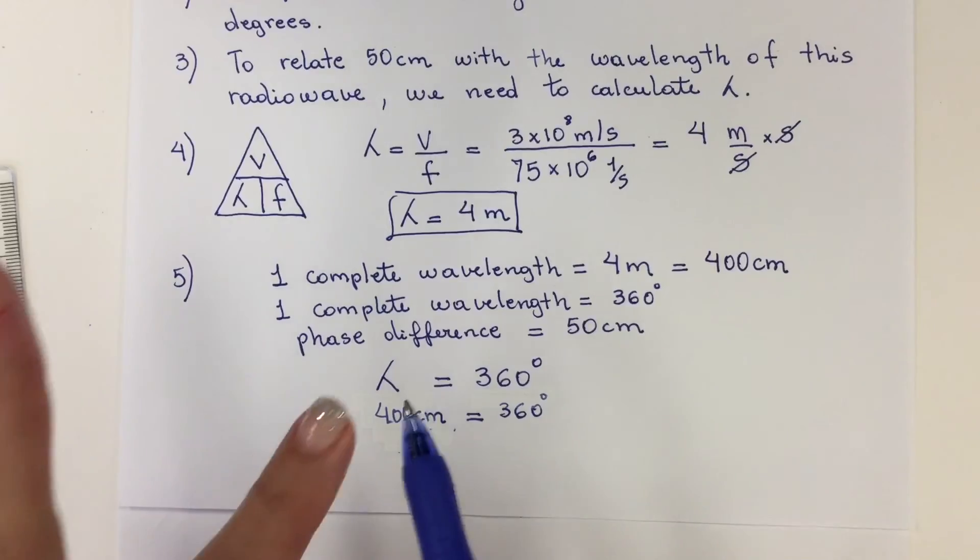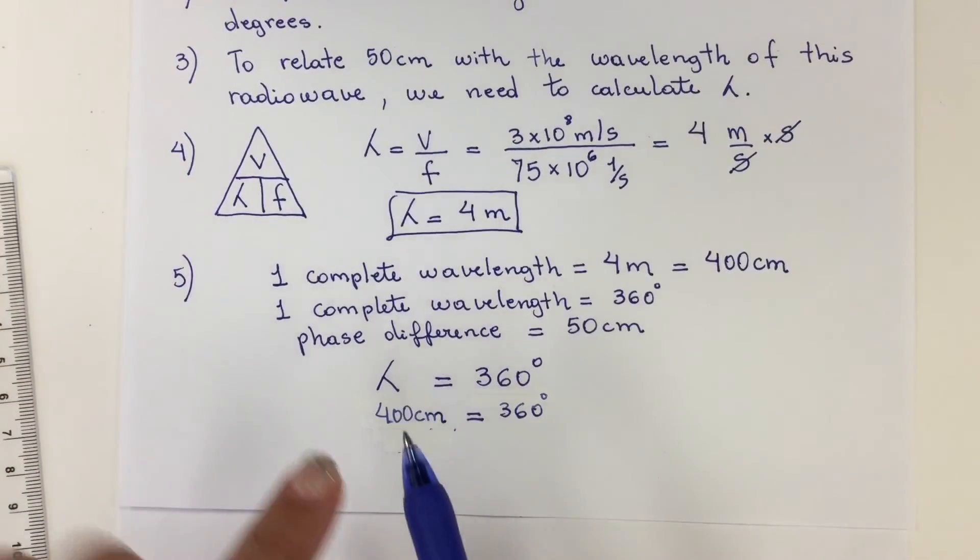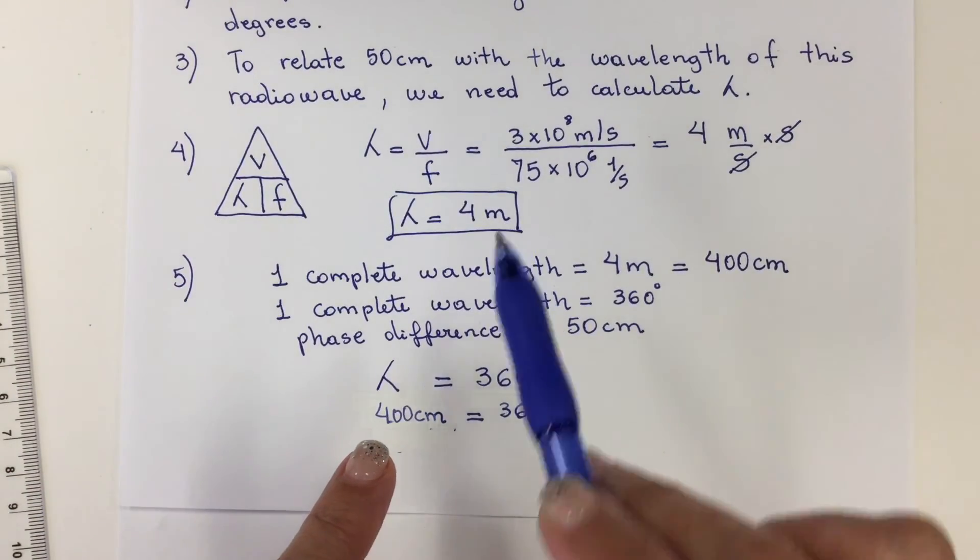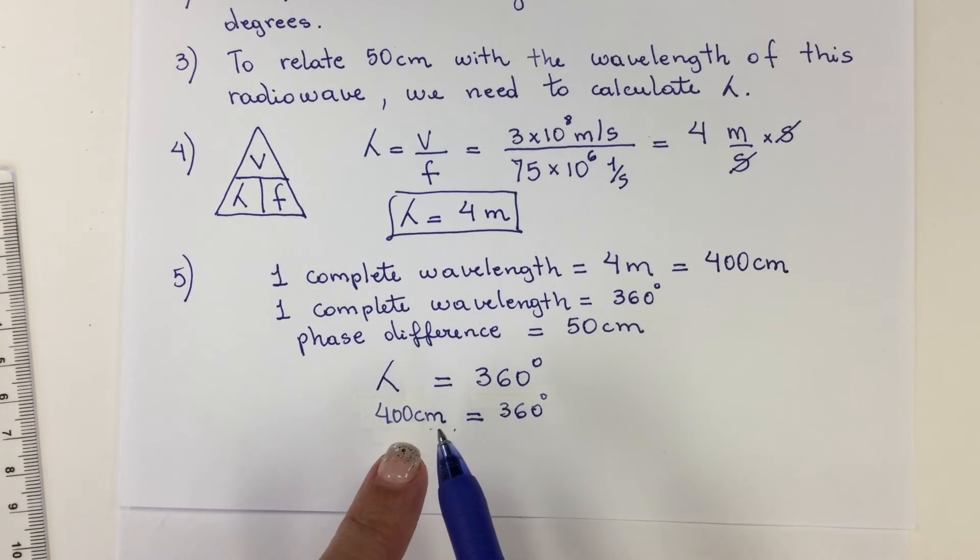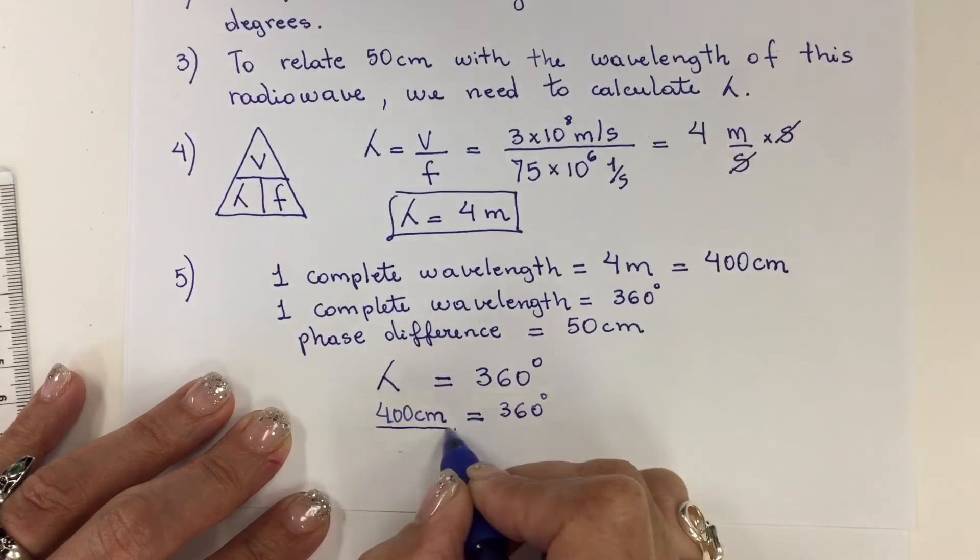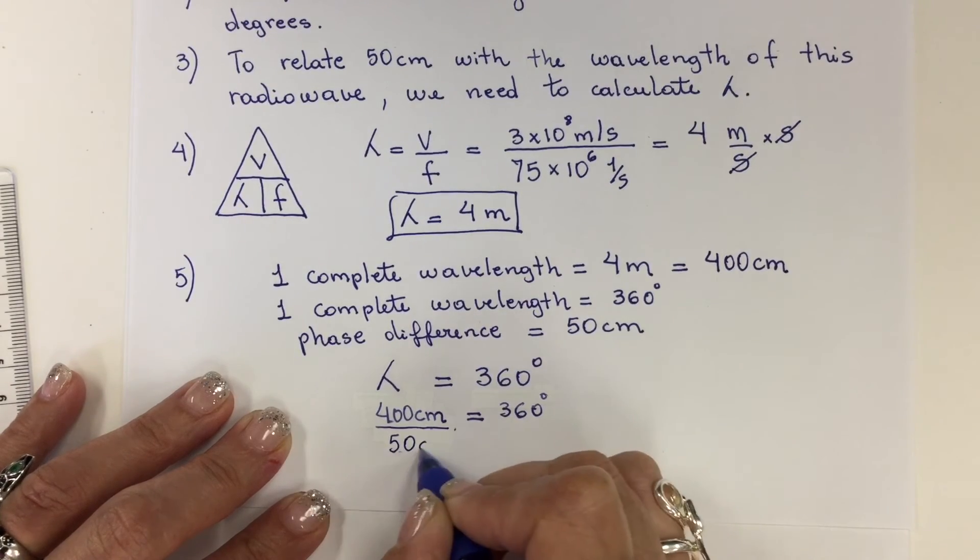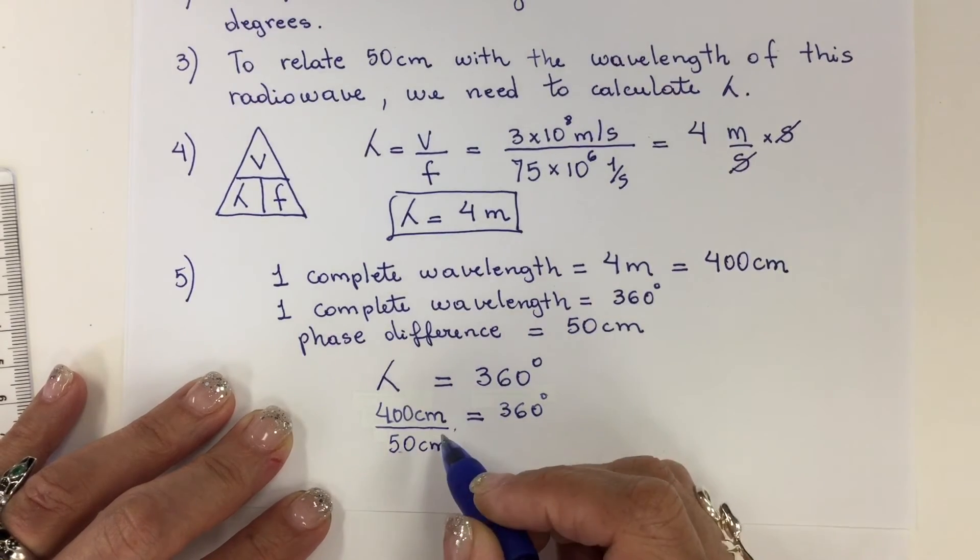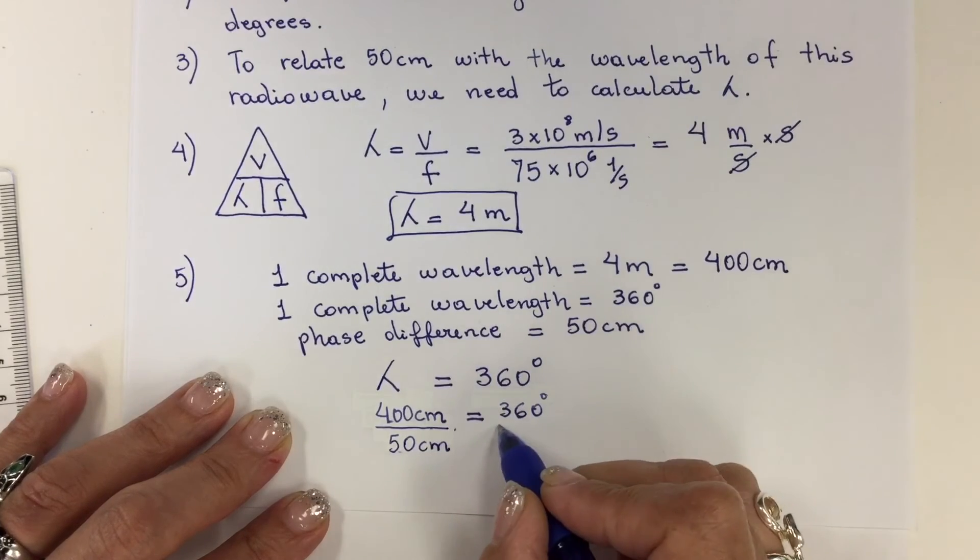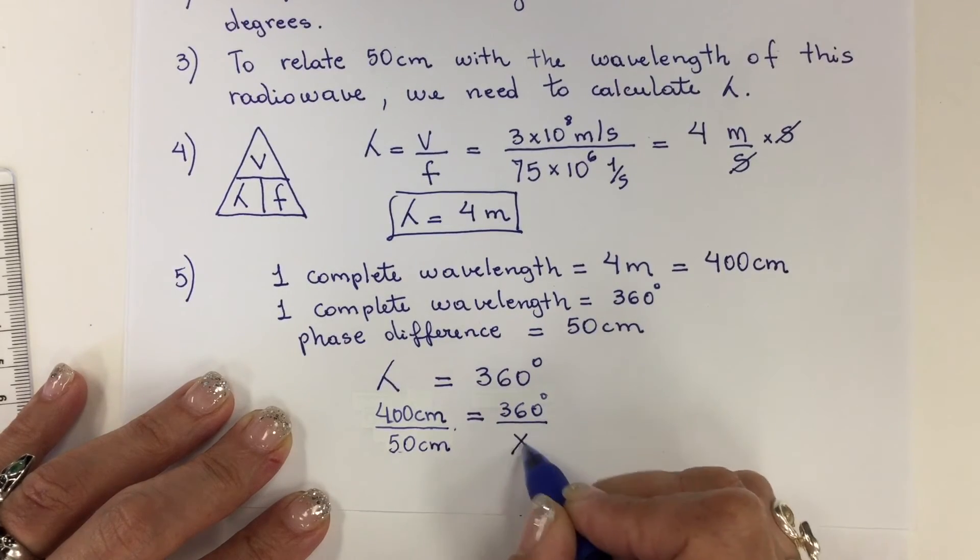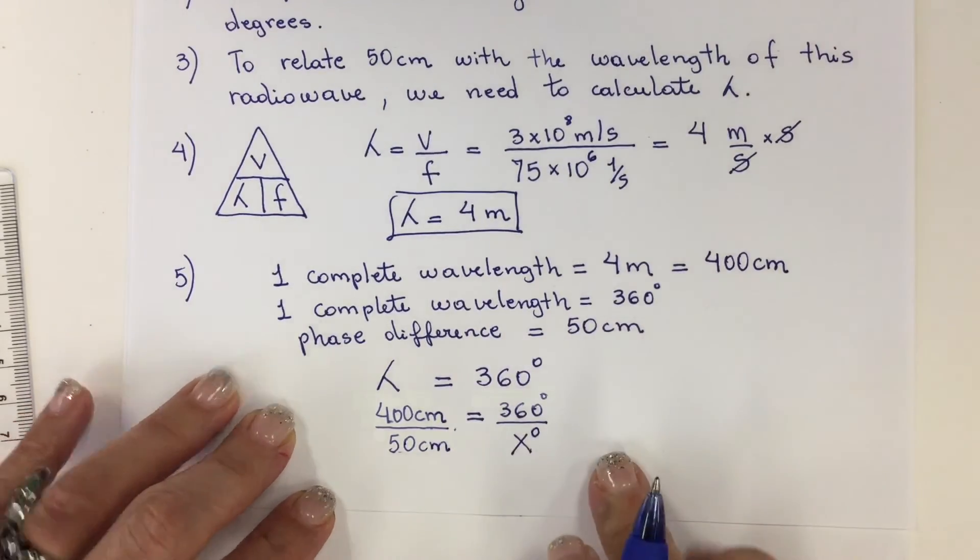I have the value of the wavelength, which is 4 meters or 400 centimeters, which equals 360 degrees. Then 50 centimeters, which is the phase difference in centimeters, will correspond to which value in degrees?